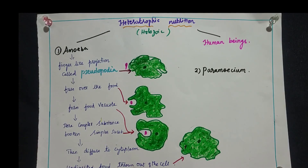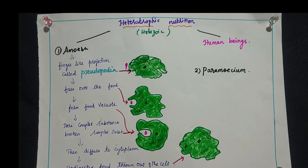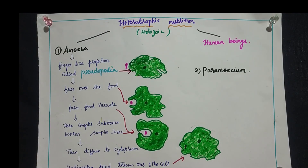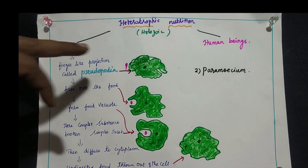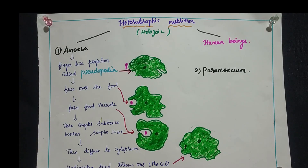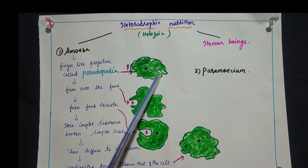Under heterotrophic mode of nutrition, we have three main types: saprotrophic, holozoic, and parasitic. We are going to discuss holozoic nutrition in detail, focusing on amoeba and human beings. Amoeba and paramecium are unicellular organisms that undergo heterotrophic mode of nutrition — they engulf food particles completely and undergo the digestion process, after which waste products are thrown out of the cell.